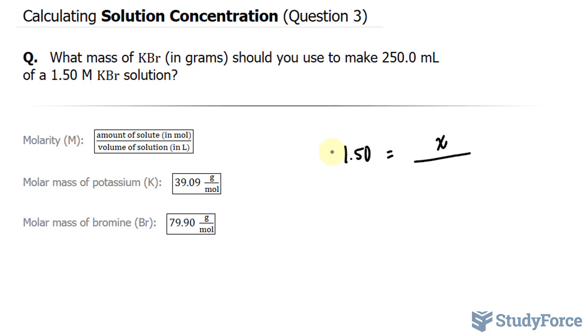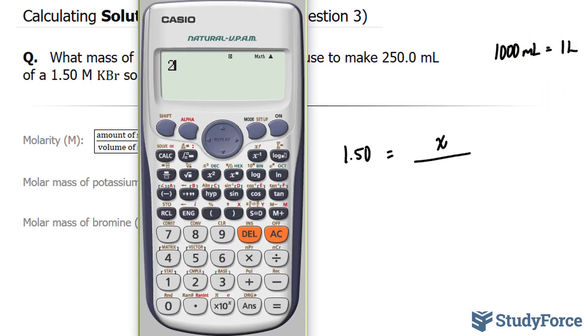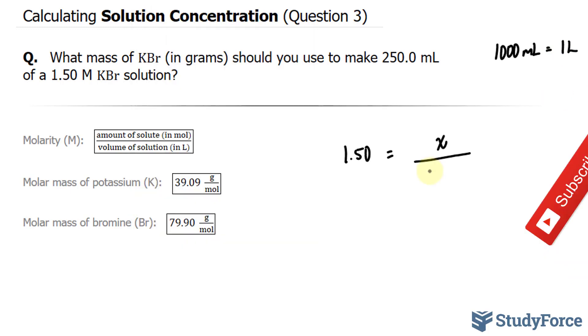To go from milliliters to liters, we need to divide this number by 1,000. The conversion ratio is 1,000 milliliters per every 1 liter. So dividing 250 by 1,000 gives us a quarter, 0.2500.